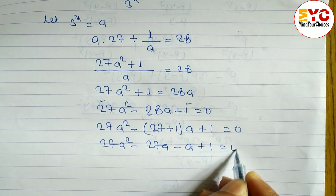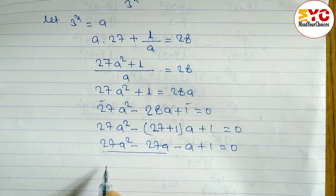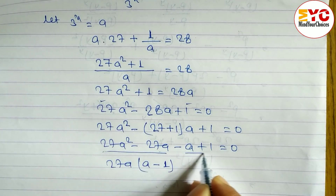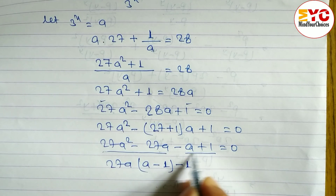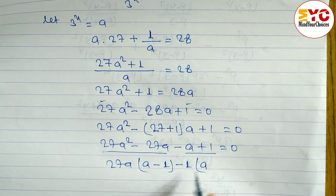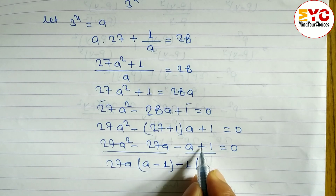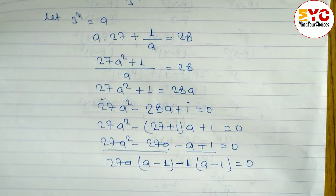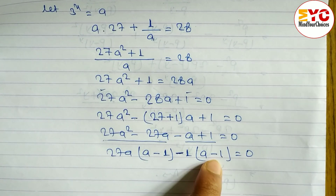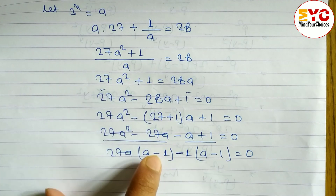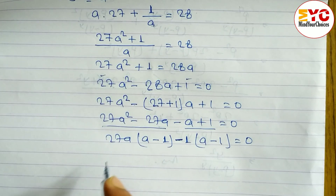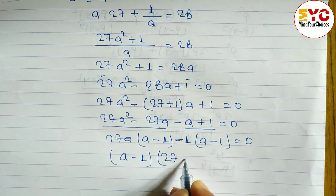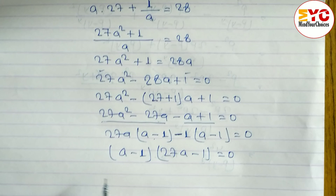From the first two terms we take common factor 27a, and the remaining is a minus 1. From the next terms we take common factor minus 1, and the remaining is a minus 1. One thing to keep in mind: if the bracket here is a minus 1, the bracket there should also be a minus 1 — if both are same it means your process is correct. So we can write a minus 1 common, with remaining 27a minus 1, equal to 0.